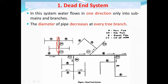To every sub-main there is a connection of branch pipes. For every connection there is a reduction in diameter — the biggest diameter will be for the main pipe. As sub-mains branch out, the diameter of the sub-main will be smaller than the main pipe. The diameter of branch pipes will be smaller than the sub-main pipe. The diameter of laterals will be smaller than the branch pipes. To these laterals there will be a house connection.